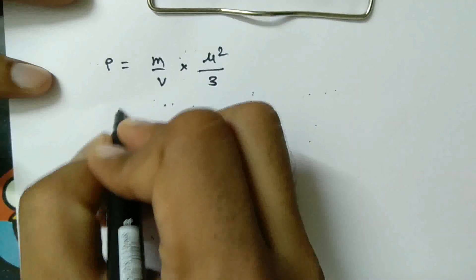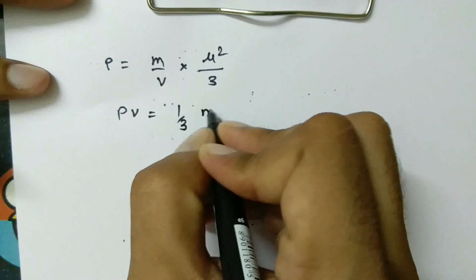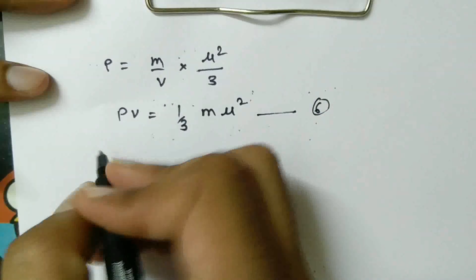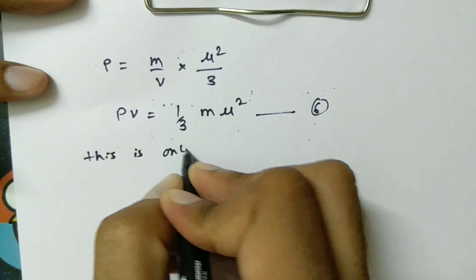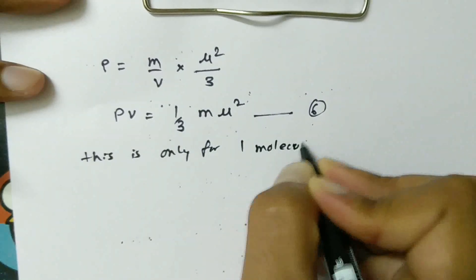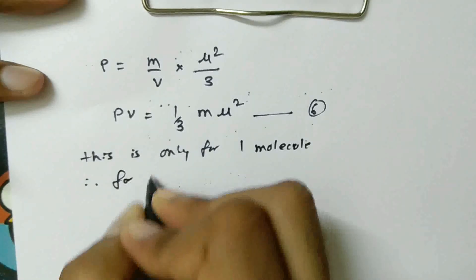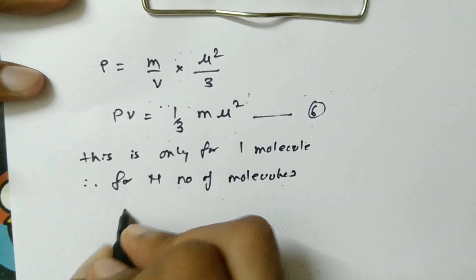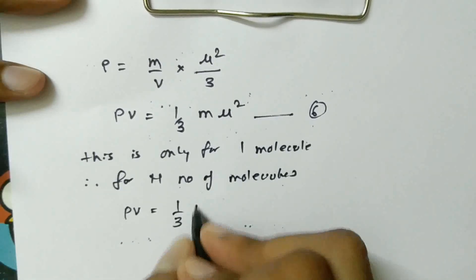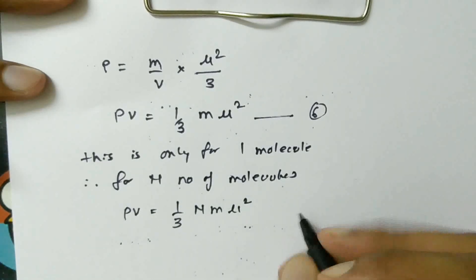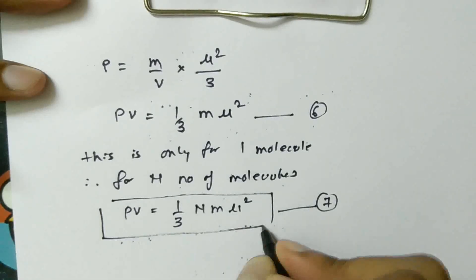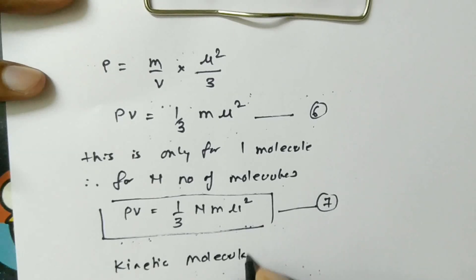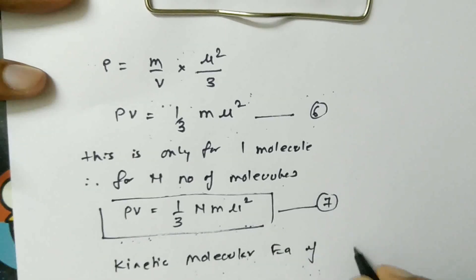Rearranging, PV equals one-third M·mu squared. This is equation 6, and it is only for 1 molecule. Therefore, for N number of molecules, PV equals one-third N·M·mu squared. This equation is known as the kinetic molecular equation of gases.